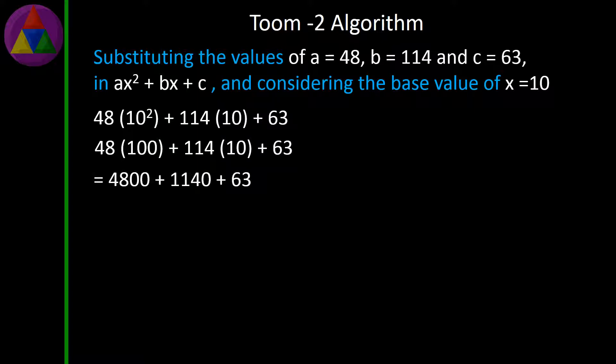Equals 4800 + 1140 + 63. Equals 6003. So, 87 × 69 = 6003.